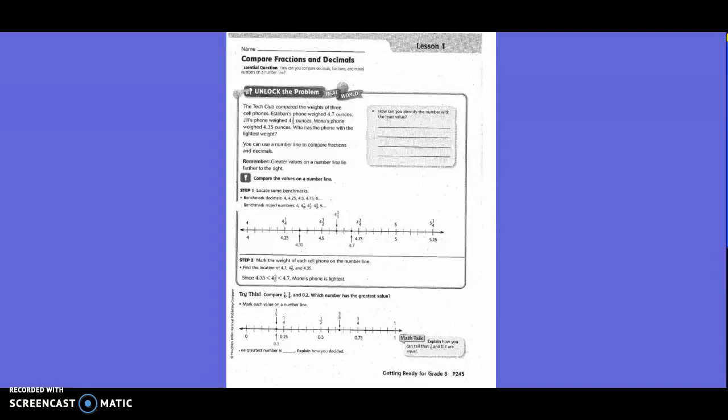5th Grade Lesson 1: Compare Fractions and Decimals. Unlock the Problem. The Tech Club compared the weights of three cell phones. Samian's phone weighed 4 and 7 tenths ounces. Jill's phone weighed 4 and 3 fifths ounces. And Mona's phone weighed 4 and 35 hundredths ounces. Who has the phone with the lightest weight?